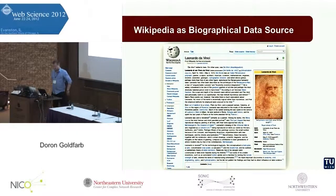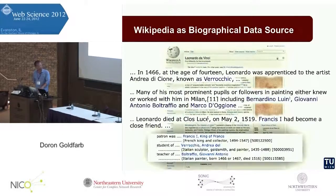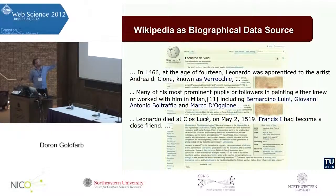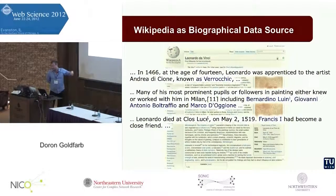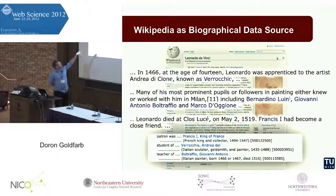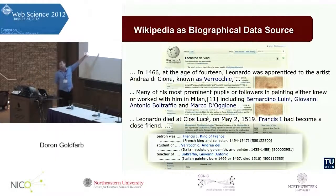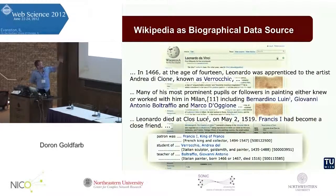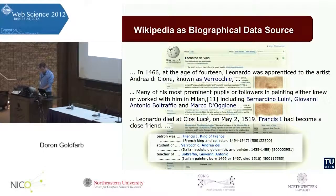Considering Wikipedia as a biographical data source — as you can see, the relationships of Leonardo da Vinci with his peers are embedded in the narrative. For example: at age 14 he was apprenticed with Verrocchio, his pupils followed him to Milan, and Francis I, the King of France, became a close friend. Of course, it's not exactly the same, but the information given in explicit form in the ULAN is also present in Wikipedia articles, and sometimes there is more information in Wikipedia and sometimes more in the ULAN.